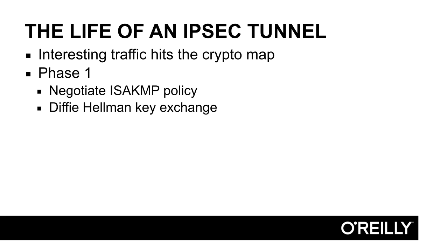The ISAKMP policy contains a combination of different protocols and settings, and these policies need to match on both sides. If that negotiation is successful, the next step is to exchange keys using a protocol called Diffie-Hellman. To protect the traffic in the tunnel, the peers need to have an encryption key that both parties share. The Diffie-Hellman key exchange protocol is a method for two devices to negotiate a common shared key without sending it in clear text over the line.